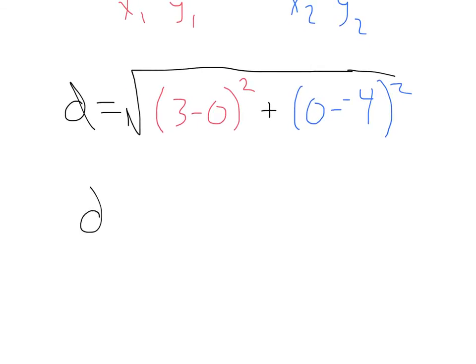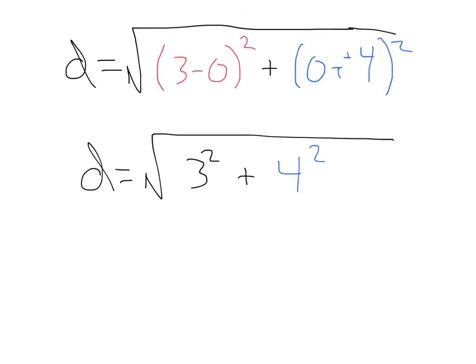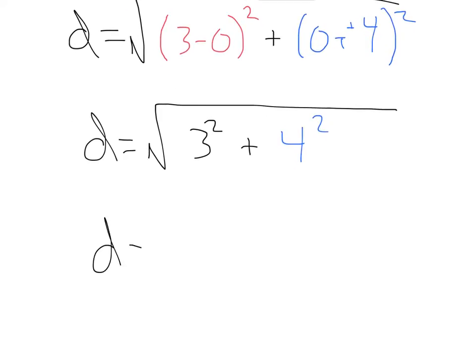That's going to give us d equals the square root of 3 minus 0, that's just 3 squared, plus 0 minus negative 4, that's going to become positive 4 squared. Going from there, we'll get d equals the square root of 9 plus 16. That's just 3 squared is 9, 4 squared is 16.